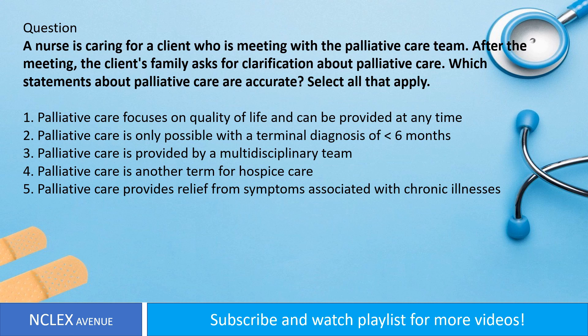1. Palliative care focuses on quality of life and can be provided at any time. 2. Palliative care is only possible with a terminal diagnosis of less than 6 months. 3. Palliative care is provided by a multidisciplinary team. 4. Palliative care is another term for hospice care. 5. Palliative care provides relief from symptoms associated with chronic illnesses.